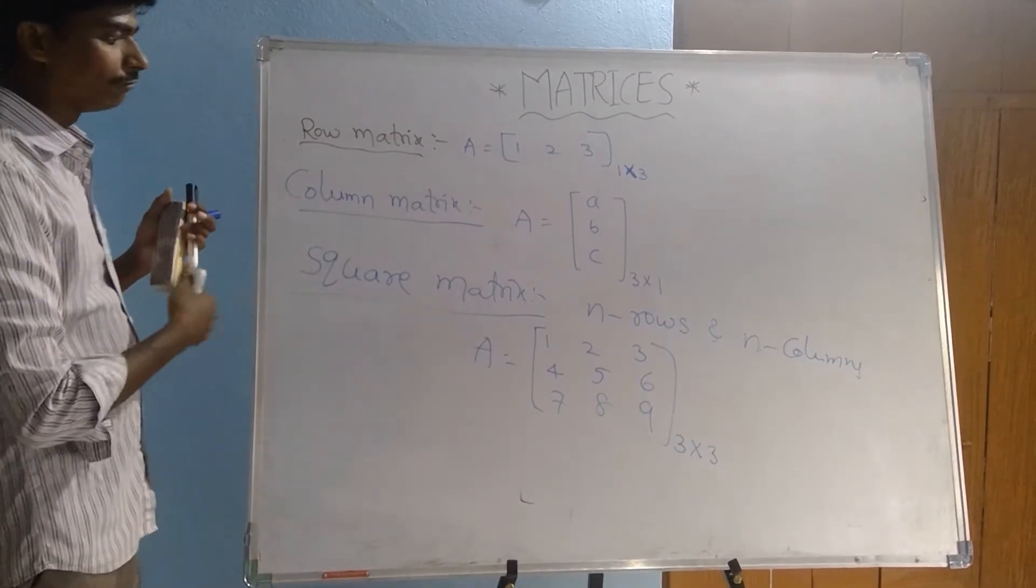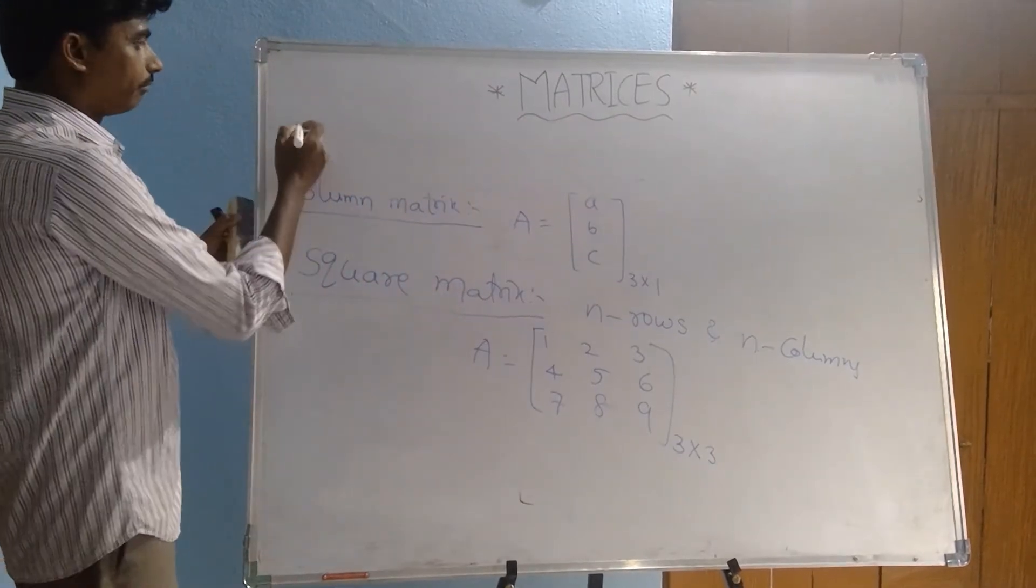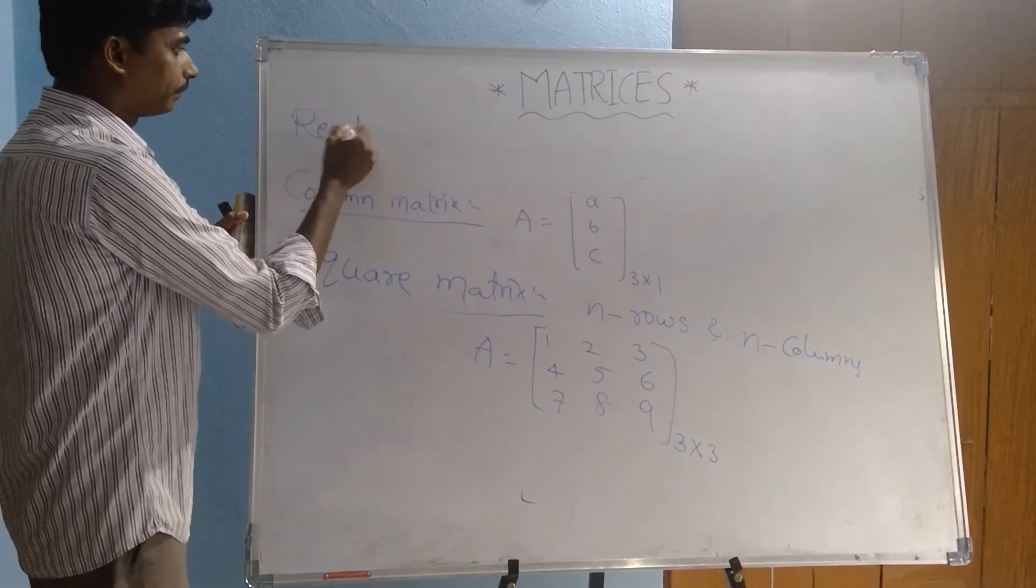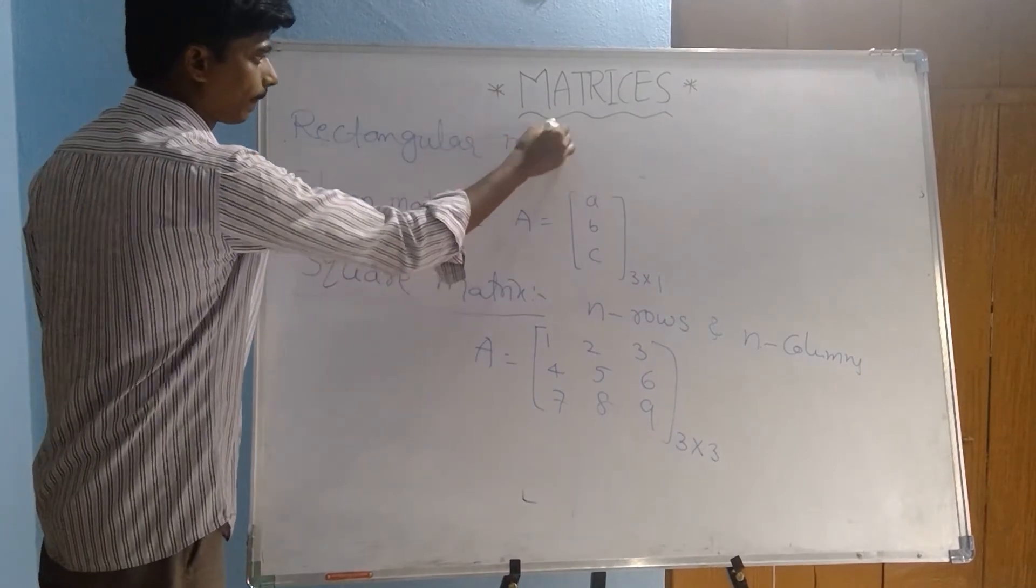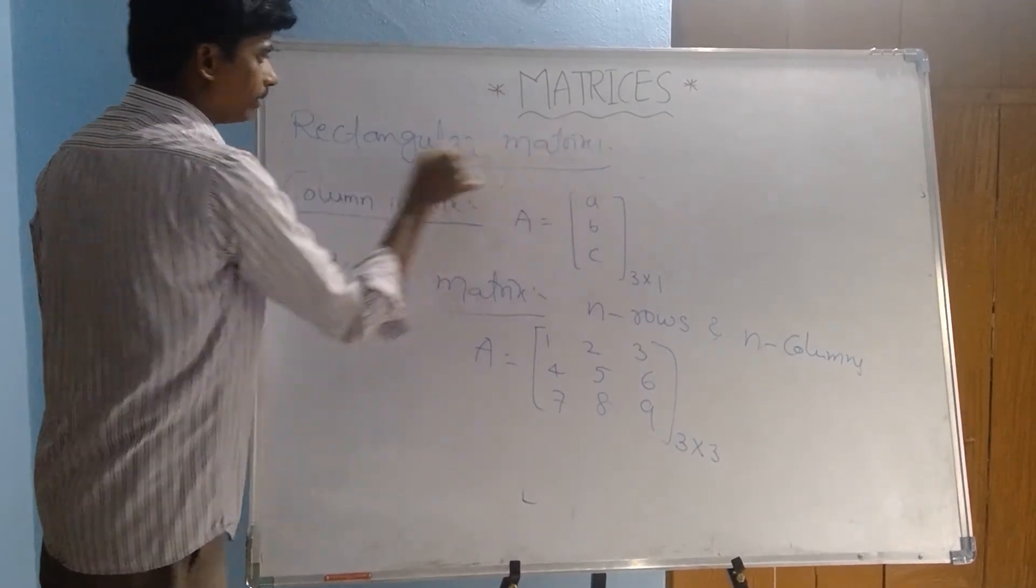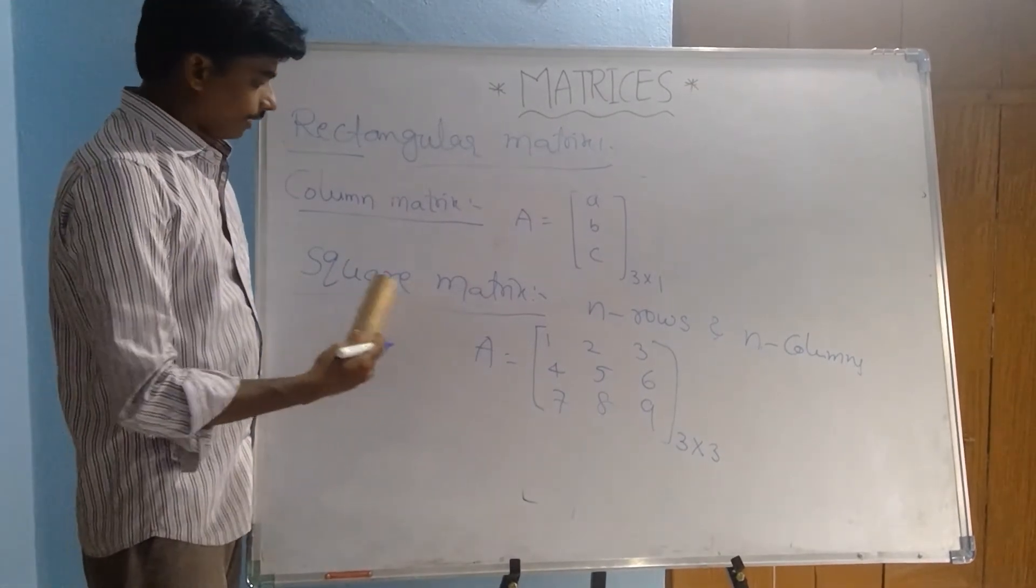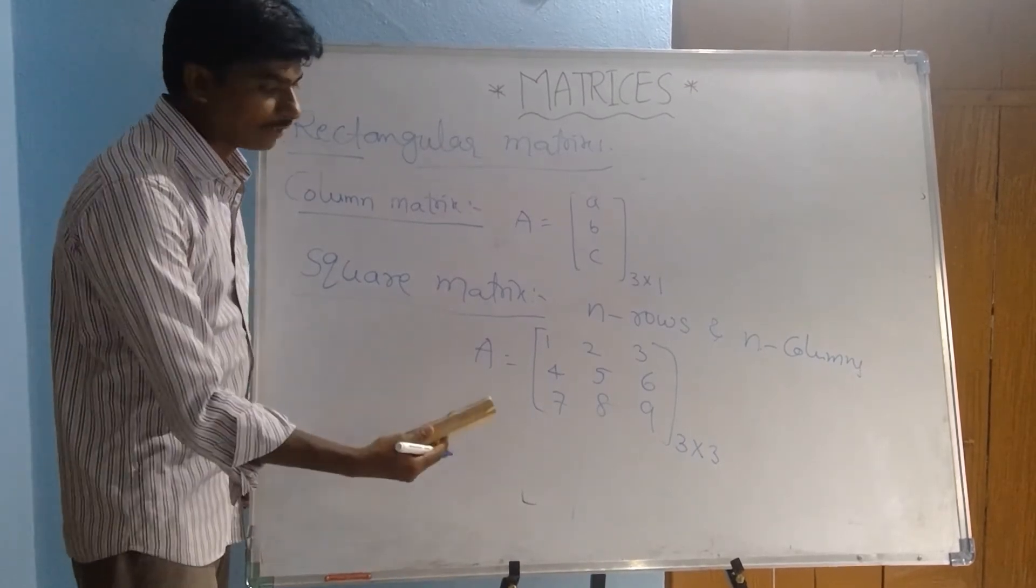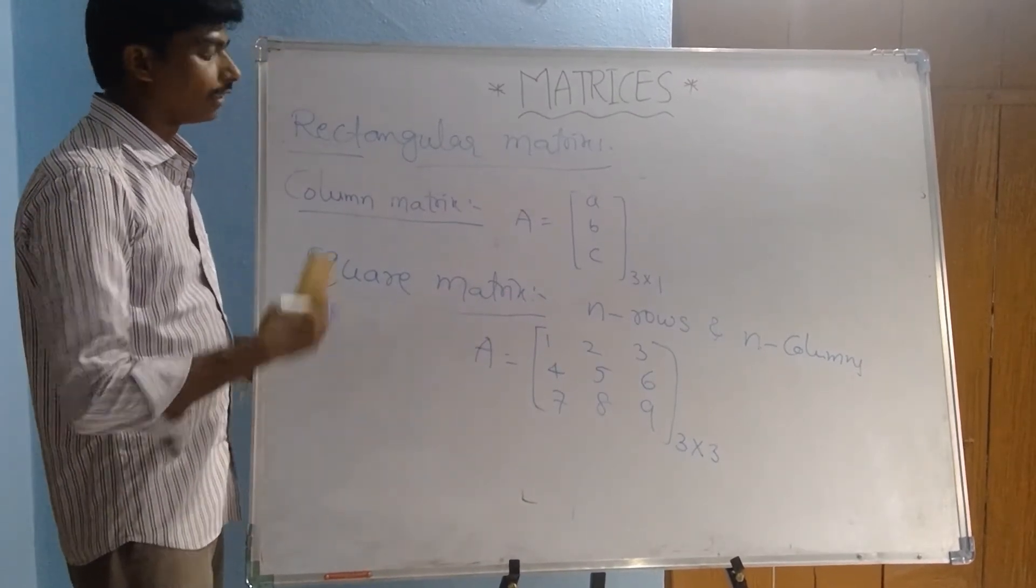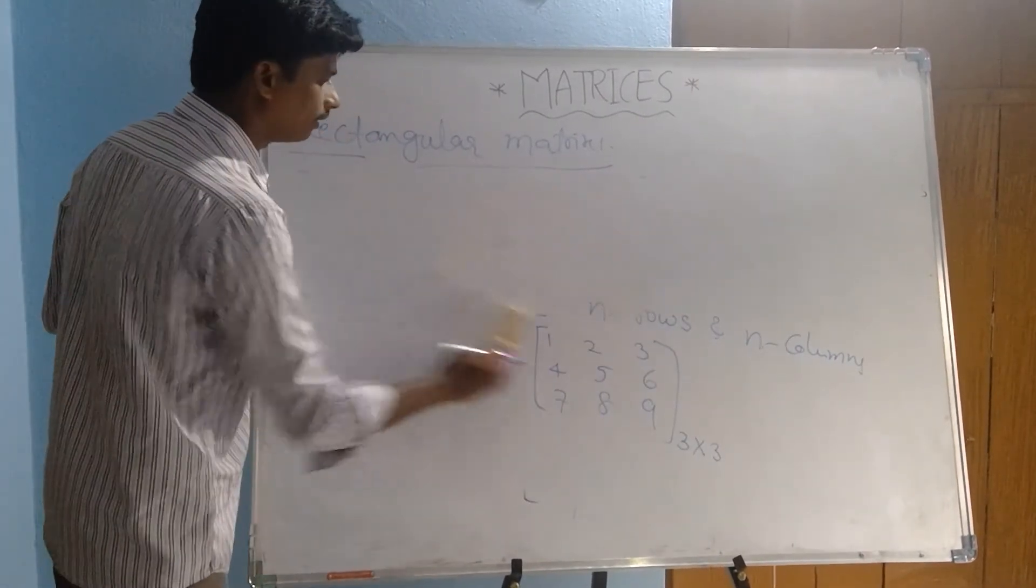Another definition: rectangular matrix. A matrix is not a square matrix, this is called as rectangular matrix.